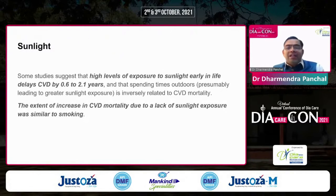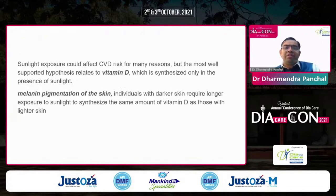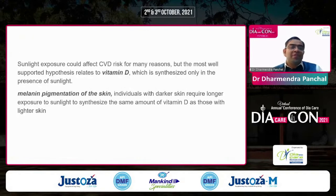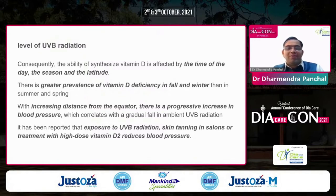High-level exposure to sunlight in early life delays cardiovascular disease by 0.6 to 2.1 years, and time spent outdoors is inversely related to cardiovascular mortality — an effect comparable in magnitude to smoking prevalence. Sunlight exposure primarily relates to vitamin D, and melanin pigmentation affects this: dark skin requires longer exposure to synthesize the same amount of vitamin D as lighter skin. The ability to synthesize vitamin D via UVB radiation is also affected by the time of day, season, and latitude.